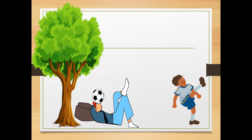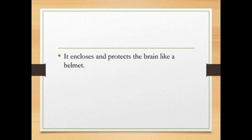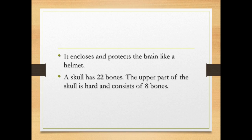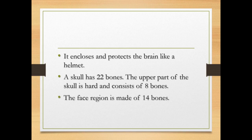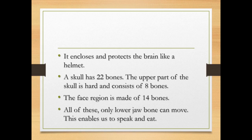Children, look here — a boy is playing football. The ball hits the head of a person lying under the tree, but it doesn't cause any injury to his brain because the skull protects the brain like a helmet. A skull has 22 bones. The upper part of the skull is hard and consists of 8 bones, and the face region is made of 14 bones. Of all these, only the lower jaw bone can move, which enables us to speak and eat.